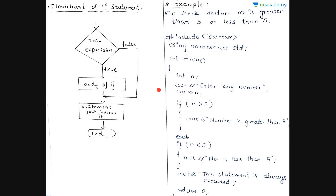We are declaring a variable n of data type int, and accepting any number in the variable n from the user. Now let us see how we use the if-else statement. If n is greater than 5, then this block of code and the following block of code should be evaluated — that is, cout 'number is greater than 5' — and this statement is always executed, so both lines will be printed on screen.